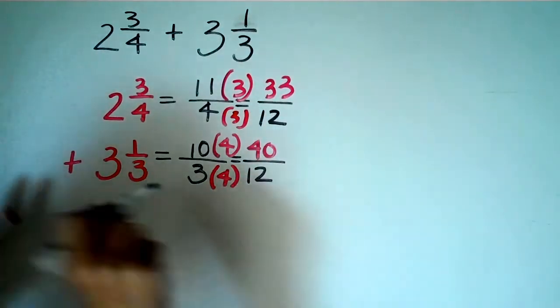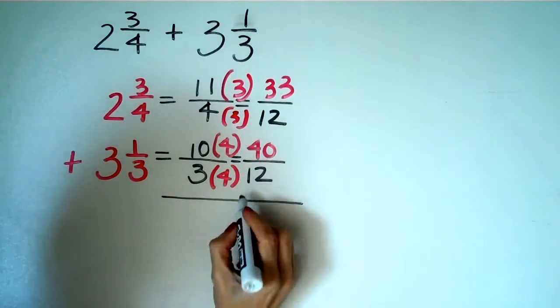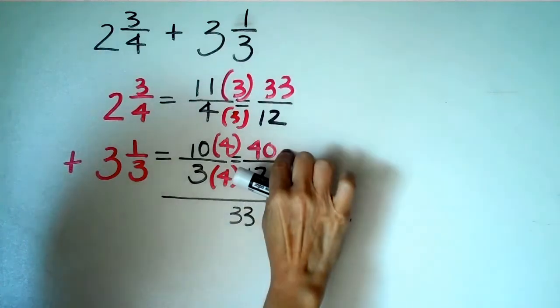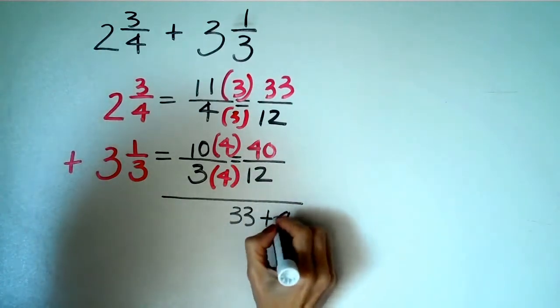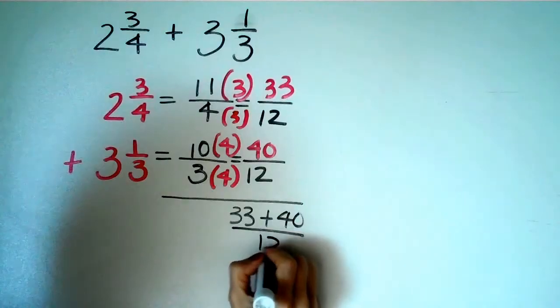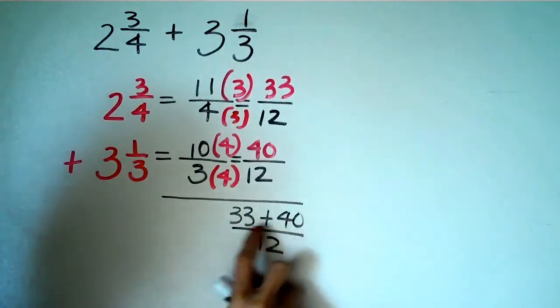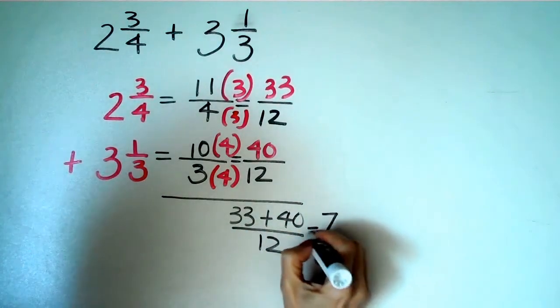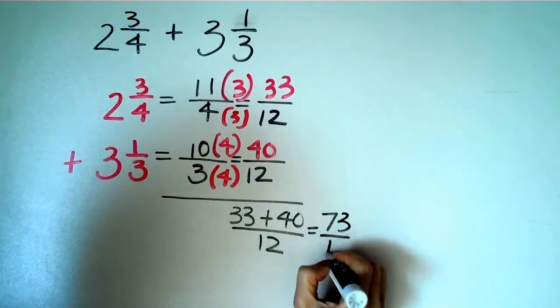And then I know four times three is twelve and eleven times three is thirty-three. So now what do I have? Well, I just have addition, right? So thirty-three on top plus forty all over twelve. So now I have forty plus thirty-three, which is seventy-three over twelve.